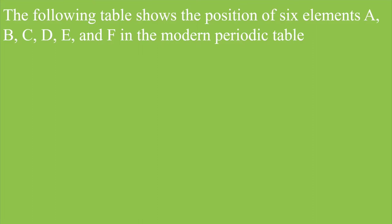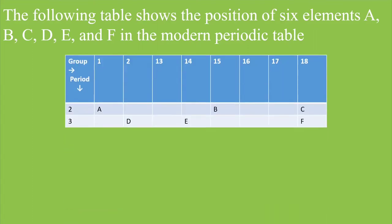And here, this is the question. The following table shows the position of six elements A, B, C, D, E, and F in the modern periodic table. And here, the periodic table is given. Now children, we can see that groups are 1, 2, 13 to 18, whereas only two periods, second and third period are given. And these are the positions of various elements. So, let us start with the first question.